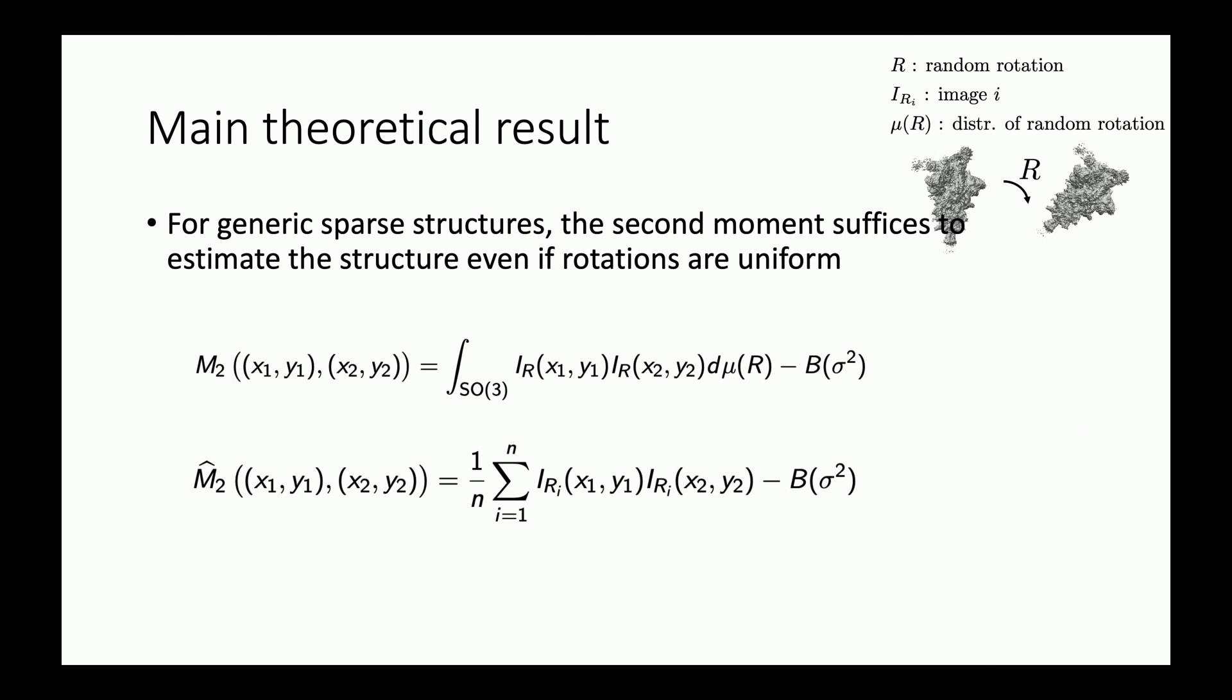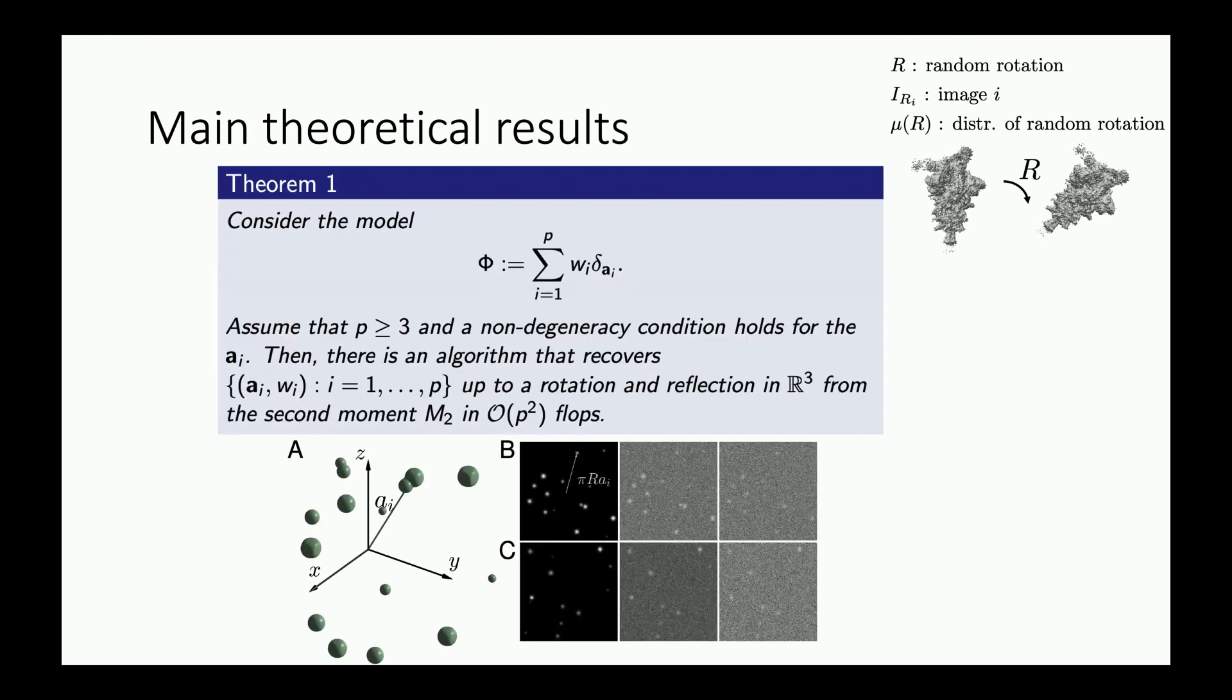The main theoretical result in this paper from September is the following. For generic sparse structures, where I'll say what sparse model exactly I mean in a few slides, the second moment suffices to estimate phi, even if the rotations are uniform. Whereas previously without any model on phi, you needed to go to the third moment with uniform rotations.